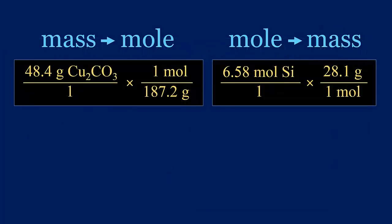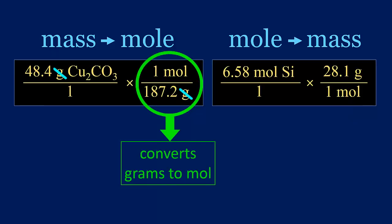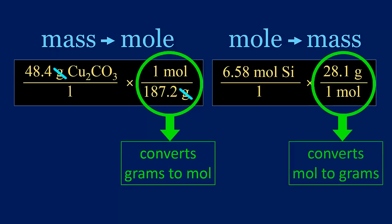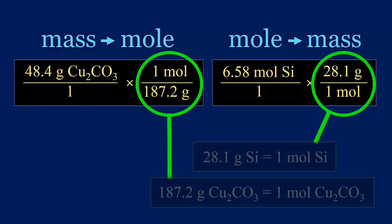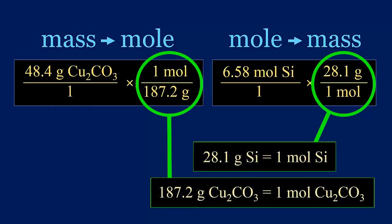Looking at the two problems side by side, we can see that the conversion factors, in this case the molar masses, can be used in either configuration, moles on top or bottom, grams on top or bottom, to suit the needs of the problem. Moles over grams converts grams to moles, grams over moles converts moles to grams. The units can be reciprocals because their relationship is derived from a mathematical equality. This is dimensional analysis. If you need a more detailed review of dimensional analysis, click here.